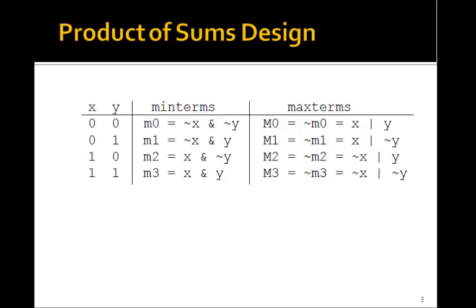And we can do the same thing with the other ones. Big M1 is just not little m1, that is not minterm m1. But minterm m1 was not x and y. Again, applying De Morgan's theorem, we'll end up with x or not y. Big M2 is not little m2. Minterm m2 was x and not y. Apply De Morgan's theorem, you get not x or y. And big M3 is not m3. Apply De Morgan's theorem to x and y, you get not x or not y.